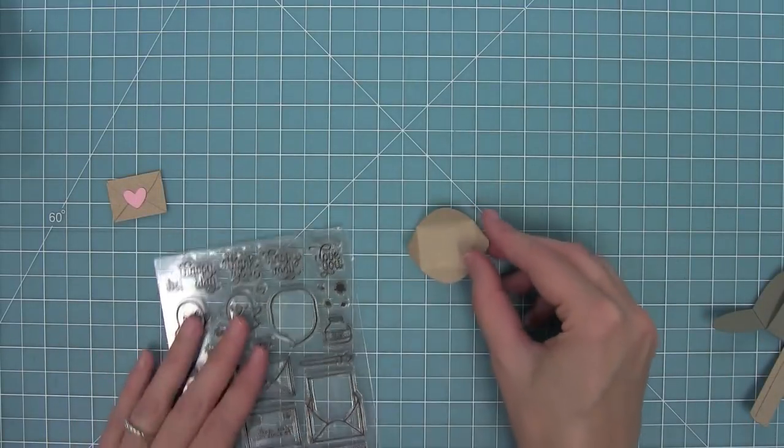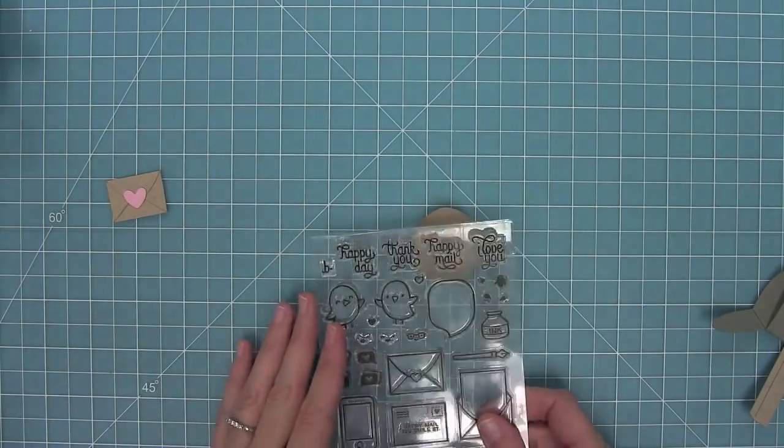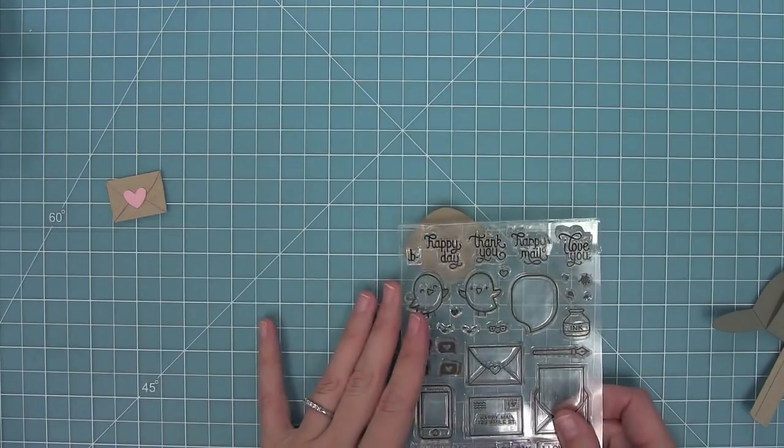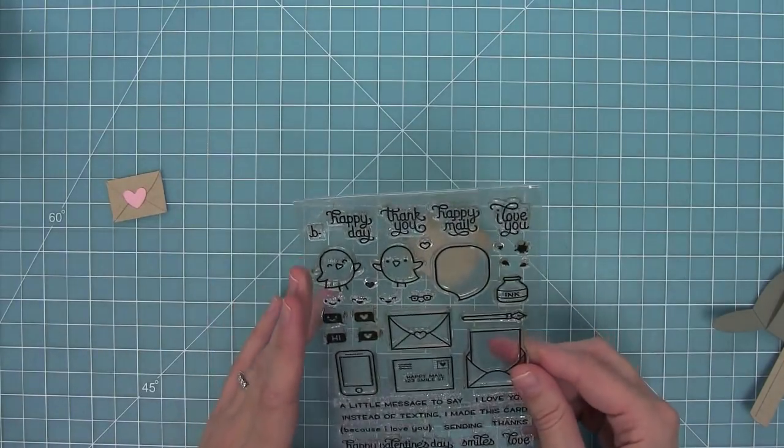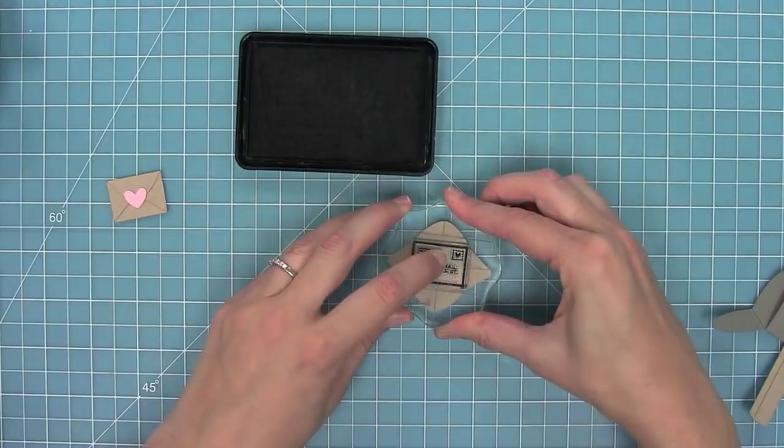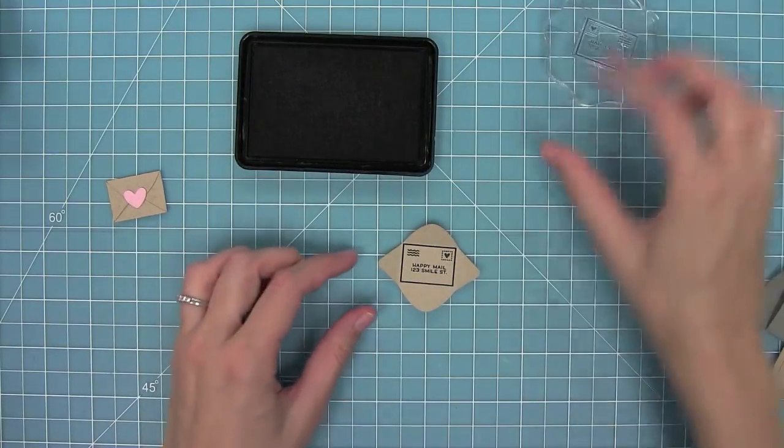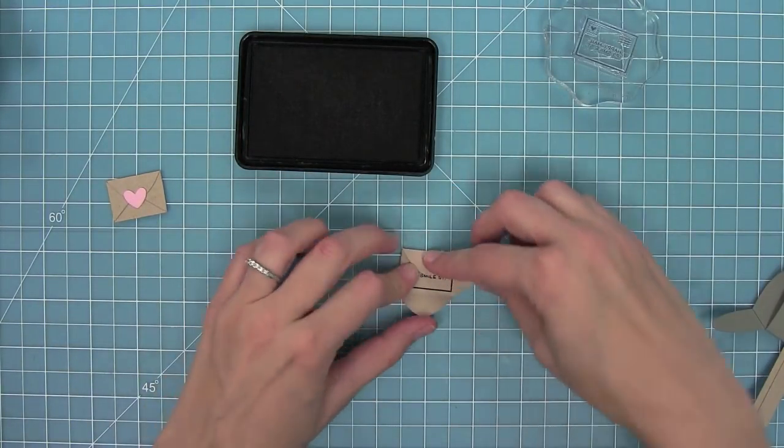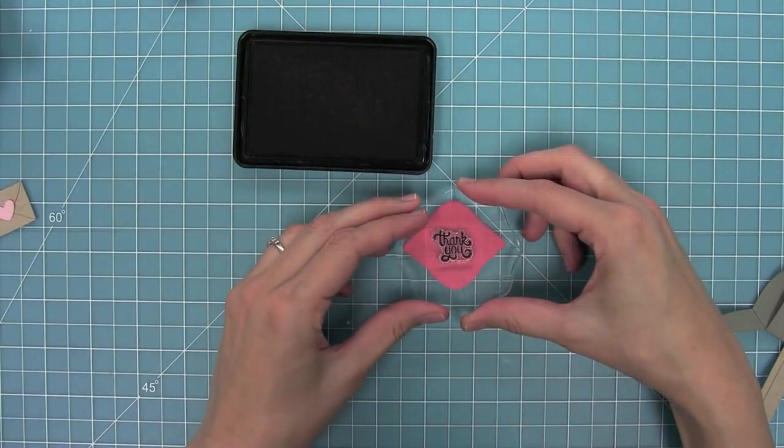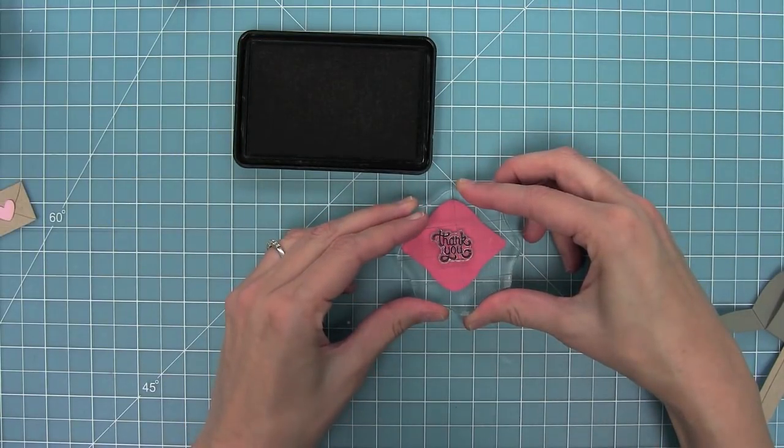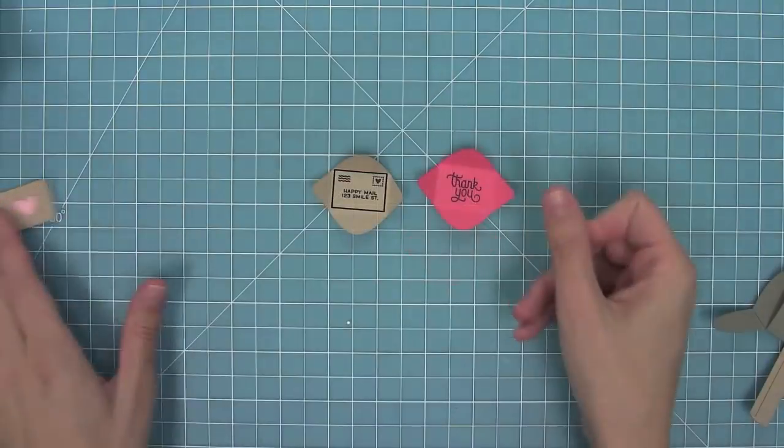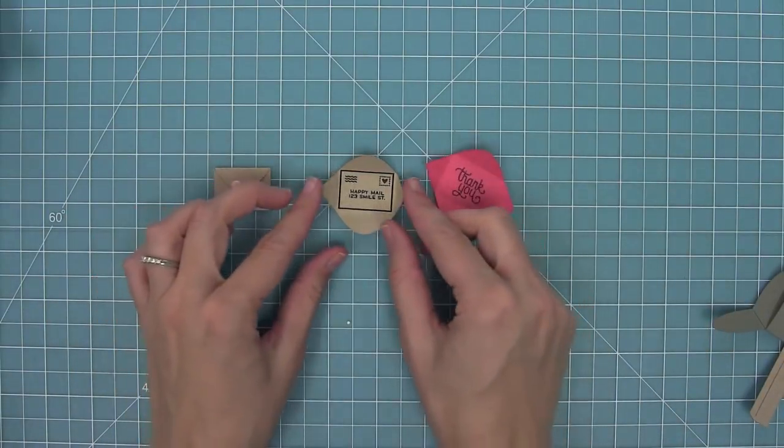Now one really cool thing about this envelope is that we sized it for all of those sentiments in the love letter stamp set. Even the little happy mail envelope also fits inside of the envelope. Here I'm going to stamp the happy mail and I think it's so cute. Then in this pink envelope I'm going to stamp the thank you sentiment which is just adorable too. I love that you can have a little hidden sentiment in there.